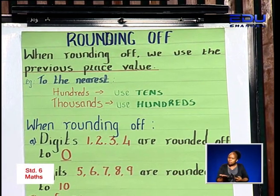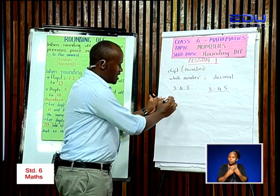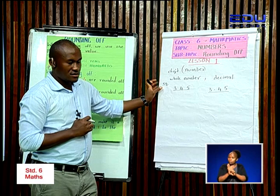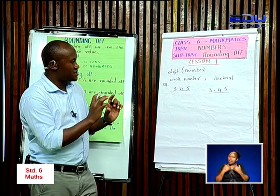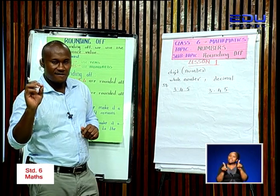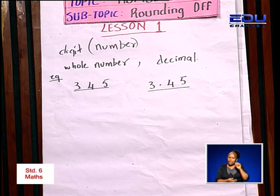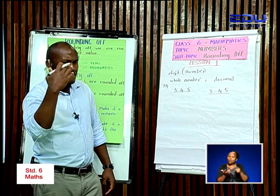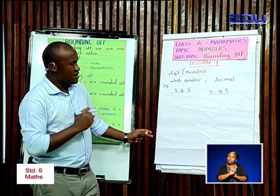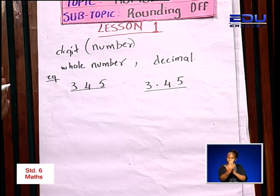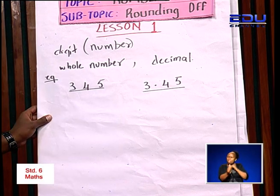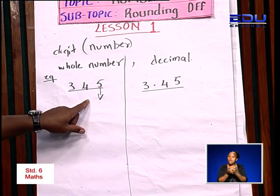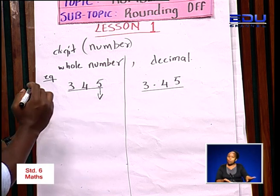What does that mean? When we talk about place value, remember we are using this as our example. This whole number has different digits, therefore different place values. To find the place value, you learned in the previous lesson that you always start with the digit on the far right hand. The digit on the far right is going to be digit five, and digit five here is going to be place value ones.